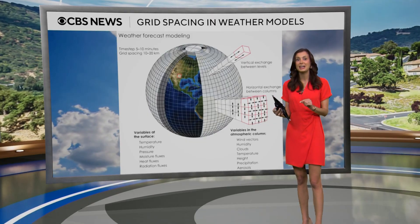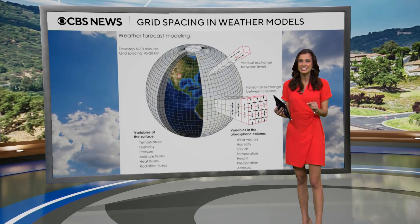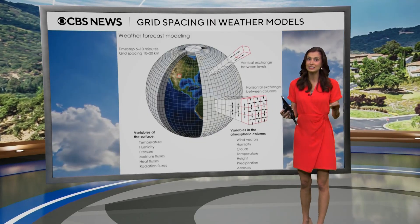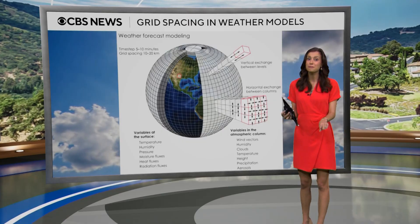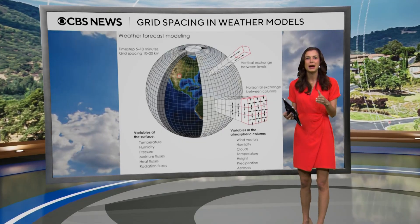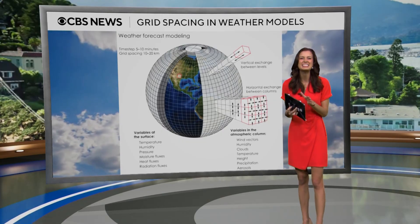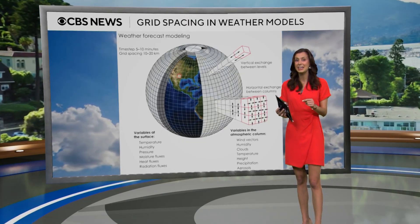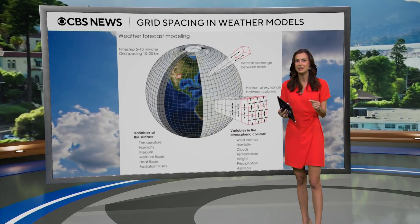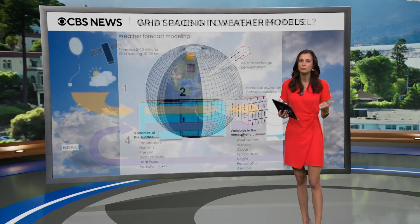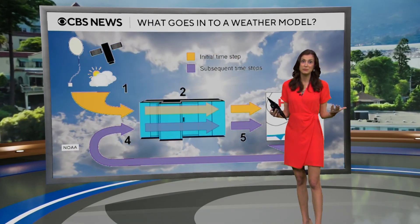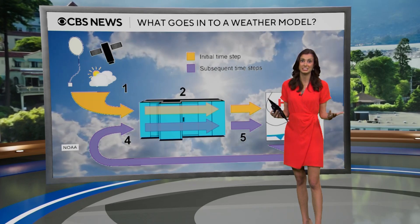That process is then repeated on millions of grid points, both horizontally and vertically in the atmosphere. The models then take these millions of calculations and combine them with physical data from weather balloons, satellite, radar — everything that comes from the National Weather Service.